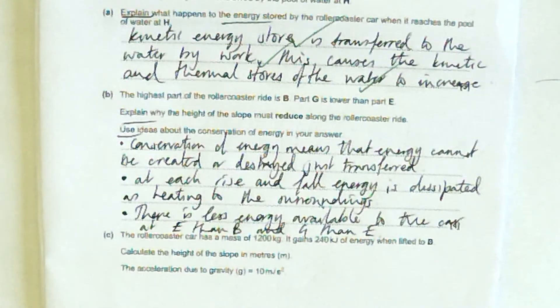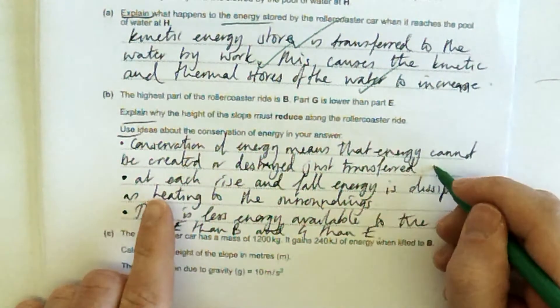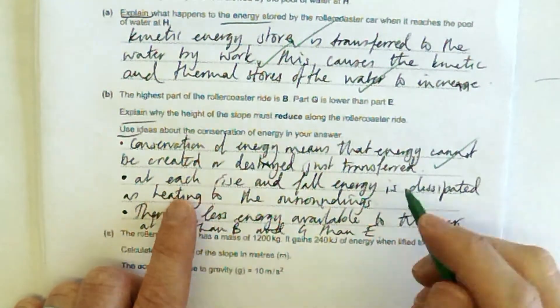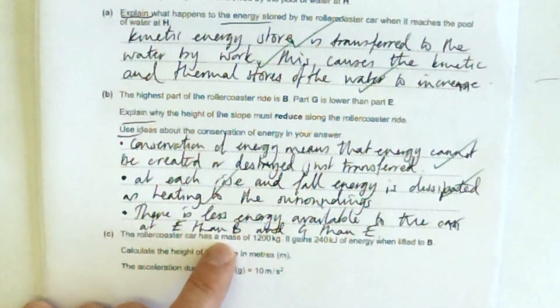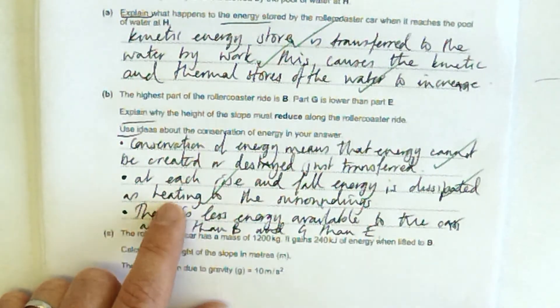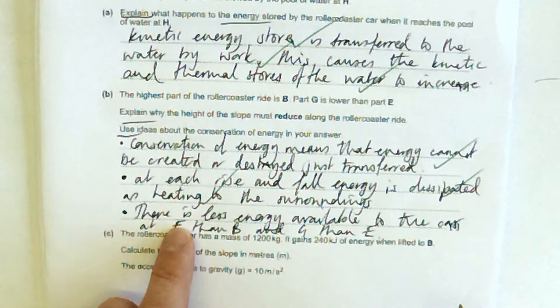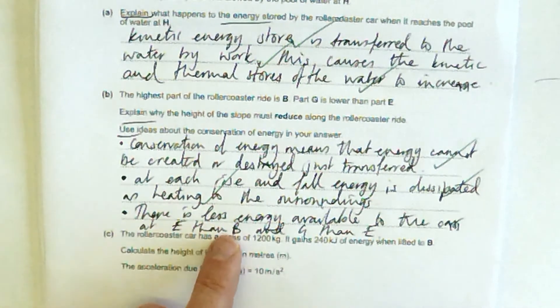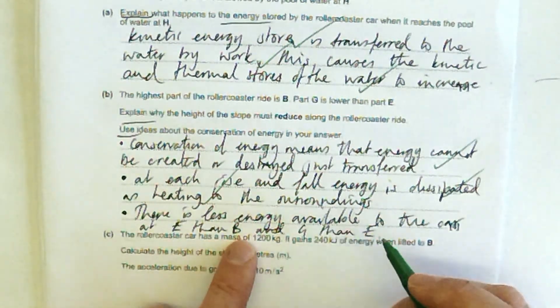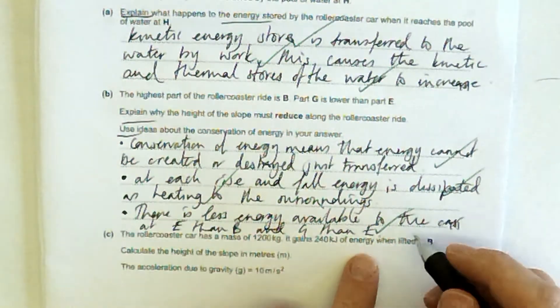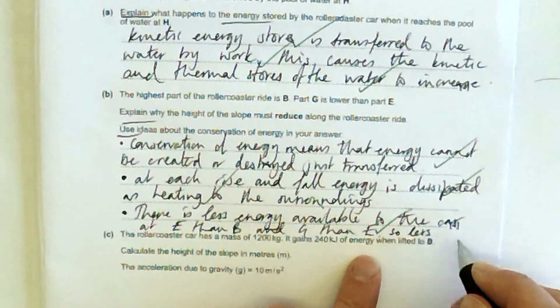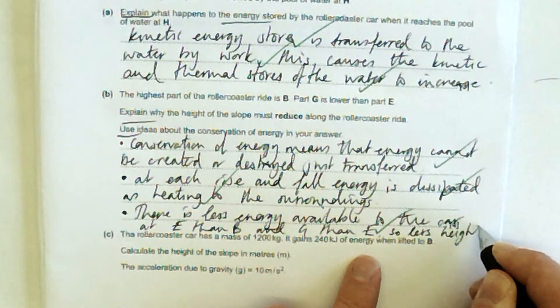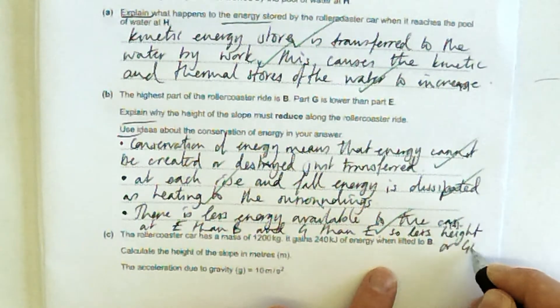I think I've got enough marks there, really. Let's have a look. I've said what the law of conservation of energy is. I've said that it's been dissipated to the surroundings. I've said it's heating that it's been dissipated to, or I could have said because of friction. And I've said this means there's less energy available to the car than E than G, and I really should link that to gravitational potential energy. So less height or GPE.